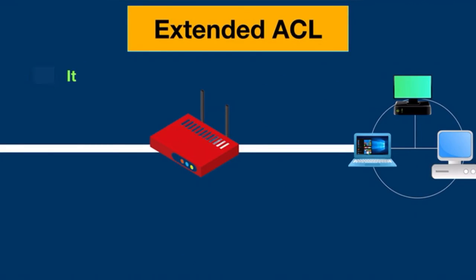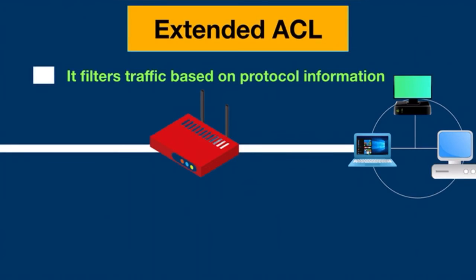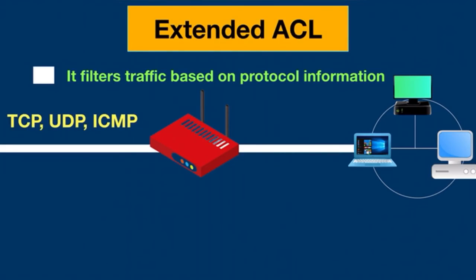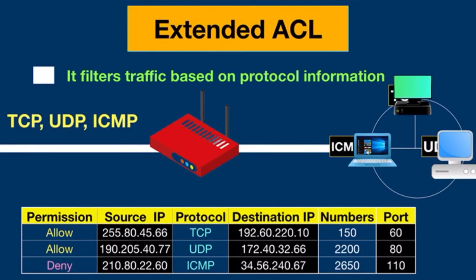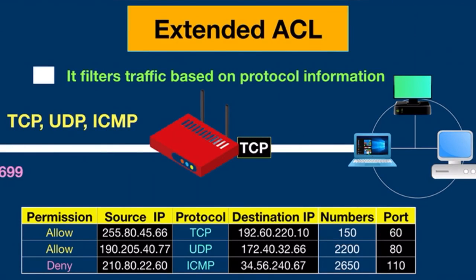Extended ACL filters traffic based on protocol information. It is widely used as it can differentiate between IP traffic such as TCP, UDP, ICMP, etc. It uses both source and destination IP addresses and port numbers to determine which IP traffic should be allowed or denied. They also use numbers within a specific range to filter the traffic. With extended ACL, you can block source and destination for a single host or entire network. The bottom line is ACL can help to organize network traffic, improve efficiency, and give the network administrator a high level of control over users on their computer systems and networks.